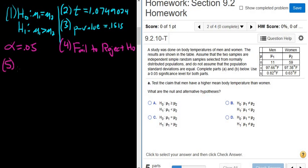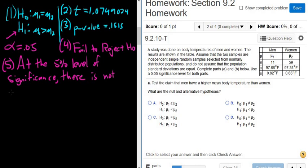And then step five is our interpretation. So we always start by mentioning our level of significance. So at the 5% level of significance. So if we reject the null hypothesis, then there is enough evidence to support H1. When you fail to reject, there is not.